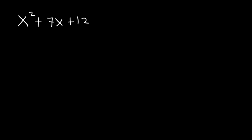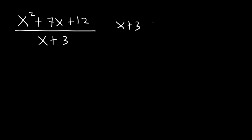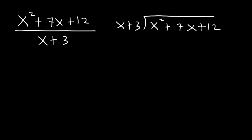Now, how can we divide a trinomial by a binomial? Let's say we have x squared plus 7x plus 12 divided by x plus 3. The answer is long division. Put the denominator on the outside and the numerator on the inside. First, divide x squared by x, which equals x.